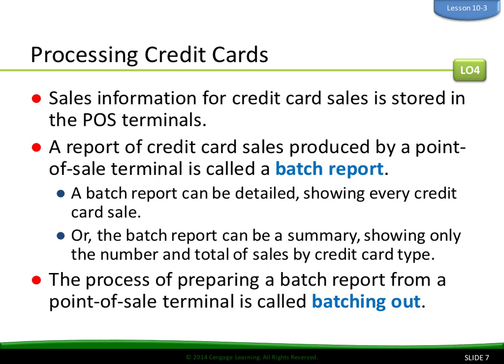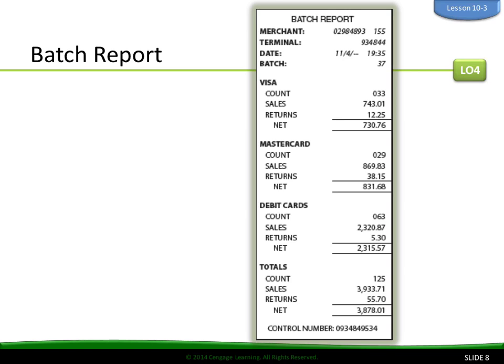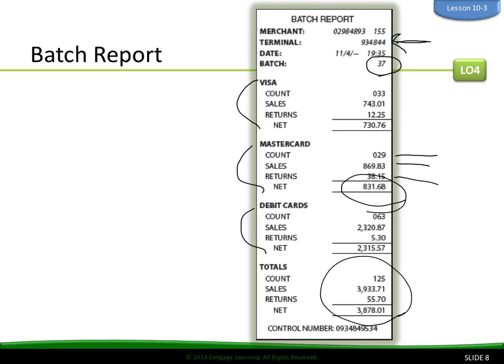Processing credit cards. Sales information for credit card sales is stored in the POS terminals. A report of credit card sales produced by a point-of-sale terminal is called a batch report. A batch report can be detailed, showing every credit card sale, or it can be a summary showing only the number and total of sales by credit card type. The process of preparing a batch report from a point-of-sale terminal is called batching out. Here's an example of a batch report — we have the merchant, the terminal number, batch number 37, Visa, MasterCard, debit cards, and all the totals. Each one shows the count, how many sales were made, the sale amount, returns, and net — sales minus returns equals net.